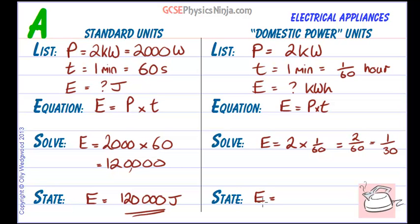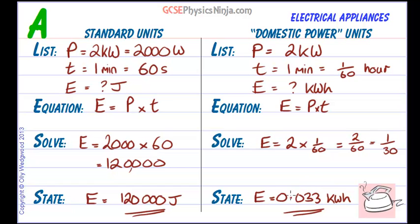So the energy equals 1 divided by 30, which is 0.033 recurring — we'll just go to 2 significant figures. The unit is kilowatt hours, so the energy transformed is 0.033 kilowatt hours. Look at the difference between this number in joules and this number in kilowatt hours. For appliances that may be on for hours in the day, the kilowatt-hour figure might be 5, 6, or 7, but the joule figure would be unmanageably large. Domestic power units calculation and standard units calculation using List-Equation-Solve-State.